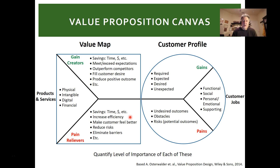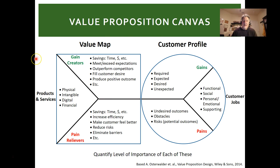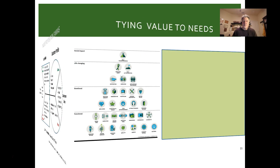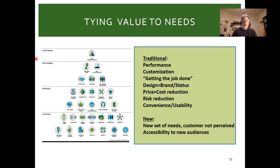You're familiar with the VPC canvas, so I won't go through pains, gains, and customer jobs-to-do further. On the value map — really around your value proposition — think about what you're creating from a gain creator or pain relief standpoint, with action-oriented items, and then ultimately your products and services. This will be a very important tool as you start thinking about your first two briefs.